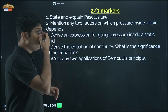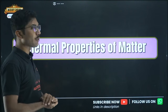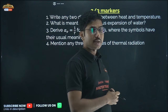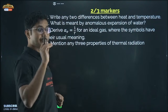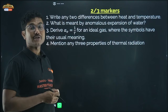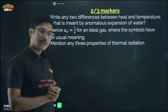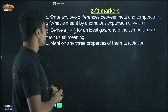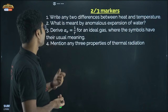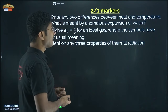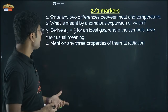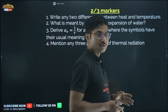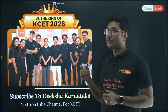The last chapter is Thermal Properties of Matter. A numerical question will come from this chapter, and a derivation on heat transported by conduction may come as a five marker. Important questions: write two differences between heat and temperature; what is meant by anomalous expansion of water; derive that αᵥ = 1/T for an ideal gas where symbols have their usual meaning; mention any three properties of thermal radiation.